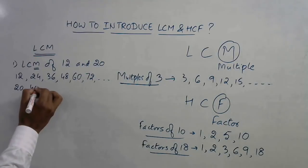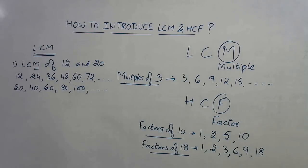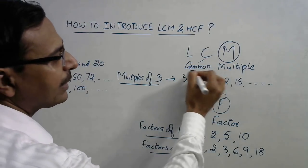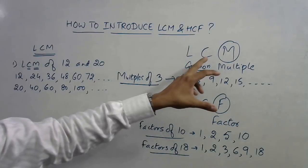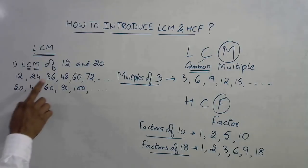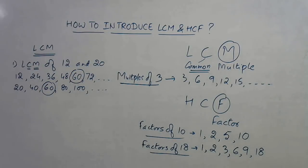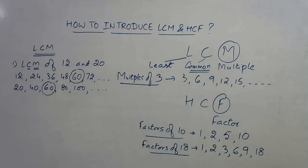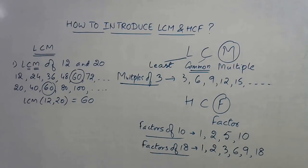The multiples of 20 are 20, 40, 60, 80, 100, and so on. Now introduce the letter C, which stands for 'common' — something which exists in both lists. Looking for common multiples: 12 is not common, 24 is not common, 36 is not common, 48 is not common — but 60 appears in both lists. Then L stands for 'least,' meaning the smallest. Before 60 there is no other common multiple, so the LCM of 12 and 20 is 60.